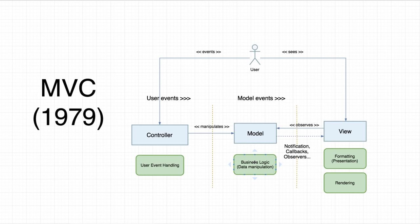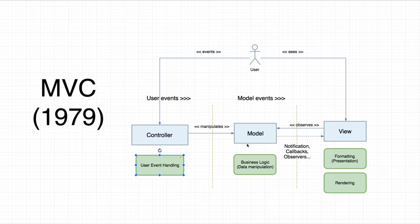After the model was done, it would broadcast changes through some mechanism like notifications, callbacks or observers. The view would have an observer relationship with the model, where it would wait for data change notifications, format that data and render it on the screen. The responsibilities at the time were very minimal: the controller just handled the event and sent commands to the model, and the view would get messages and render them on screen.